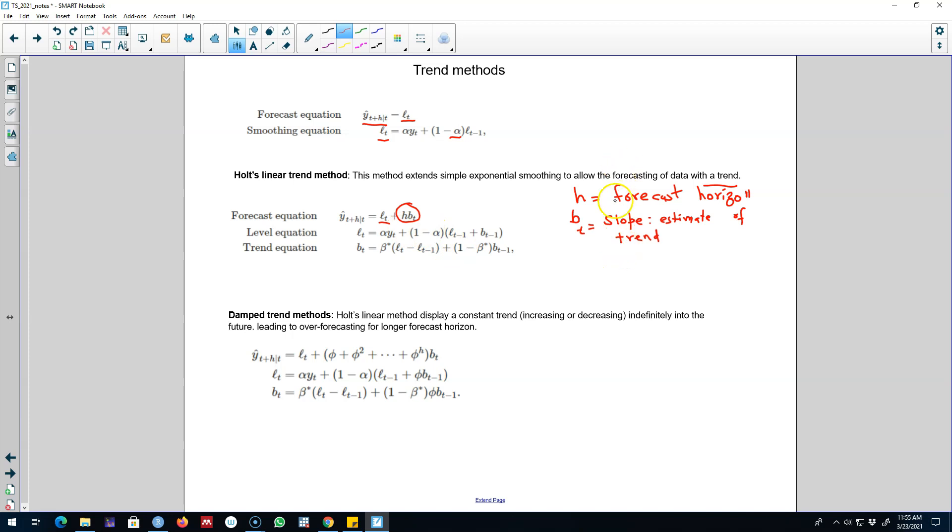So now our forecast equation will be based on the slope of the trend. Remember here we are estimating a time series with a trend, so here we are using the slope parameter of this line in the forecasting equation.